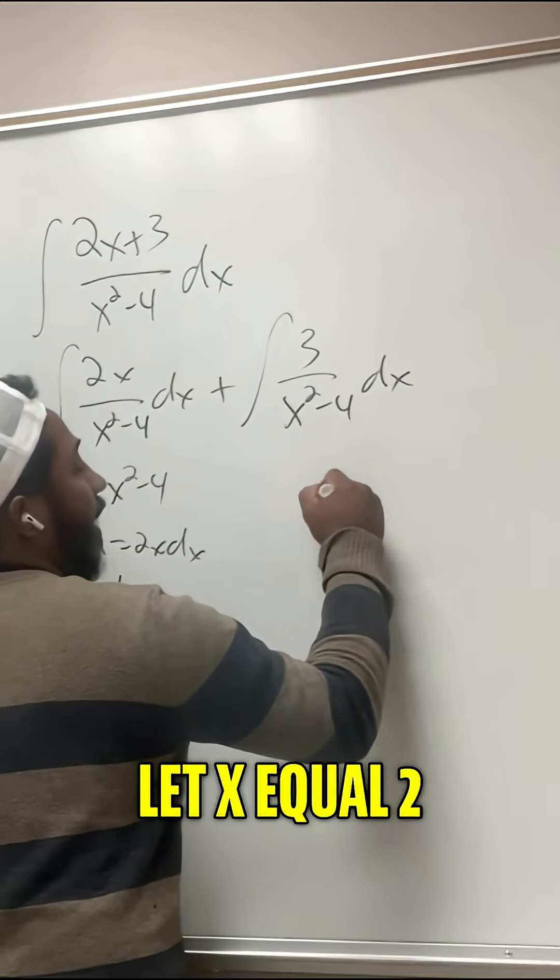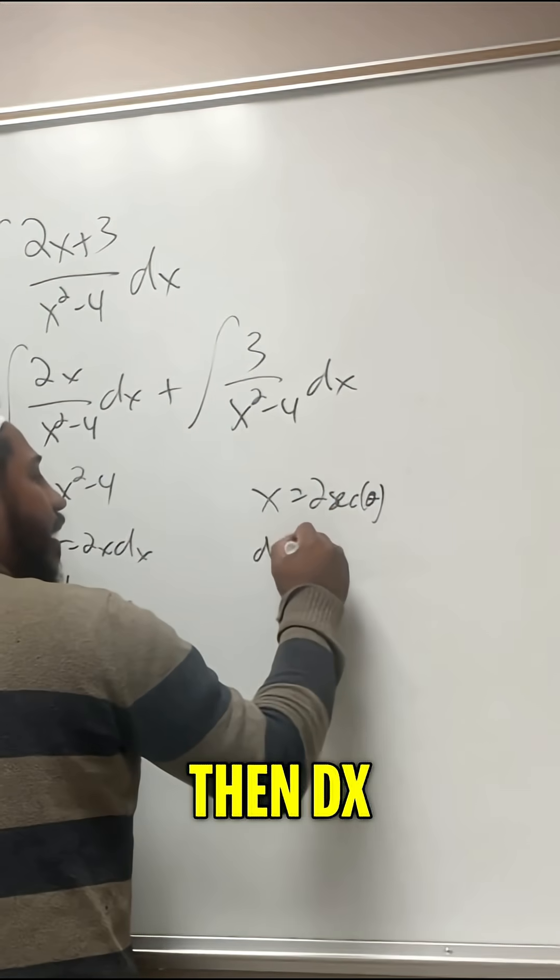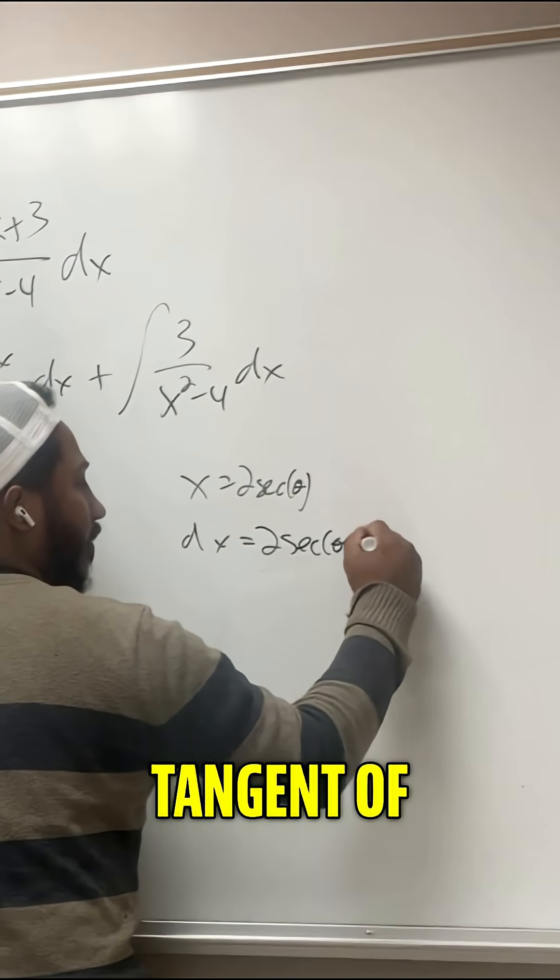And this one here is a trig sub, right? Let x equal 2 sec of theta. Then dx is 2 sec of theta tangent of theta d theta.